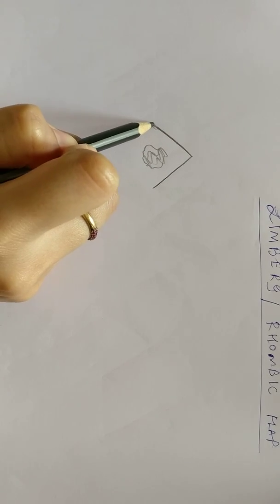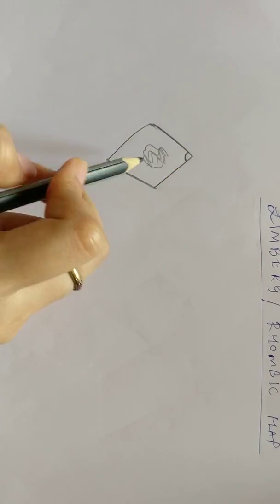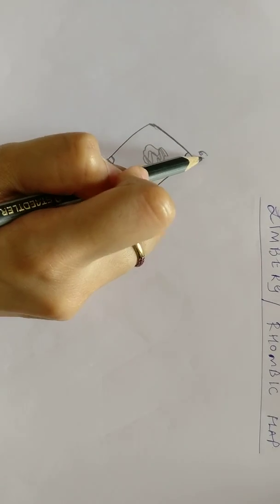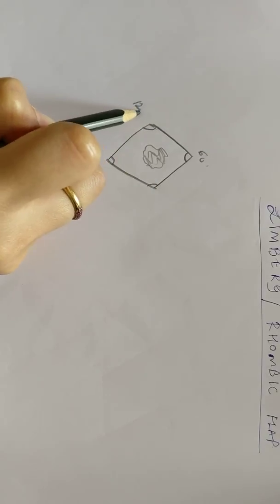In this, all sides are equal and the opposite angles are equal. In this case, the opposite angles are of 60 degrees and on this side the opposite angles are of 120 degrees.